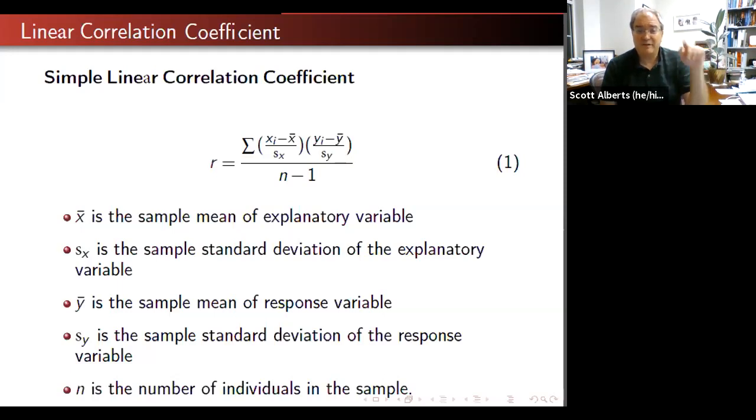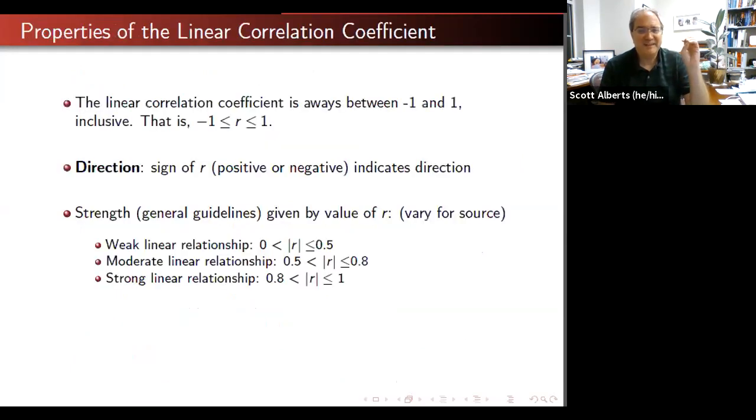One interesting thing is because these z-scores divide by the units, so the top is a unit, the bottom is the same unit, it cancels. We don't have any units at all. So r is what we call a unitless measure because it's another one of those things we can compare just like z-score, I guess, right? Because that's what we talked about before.